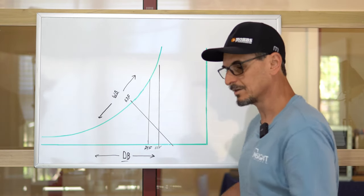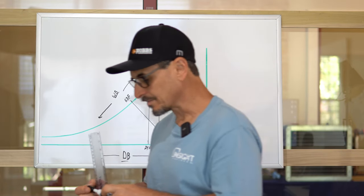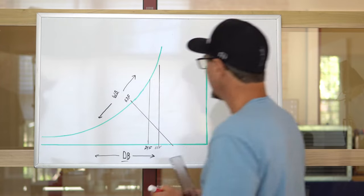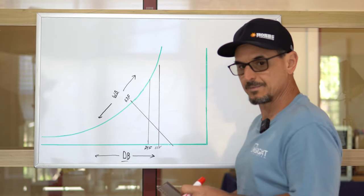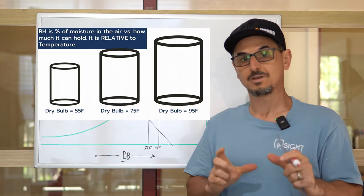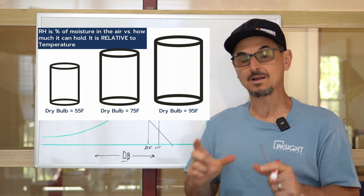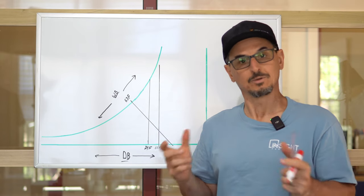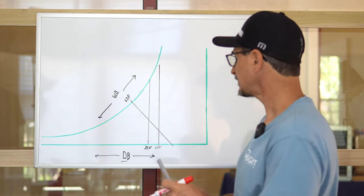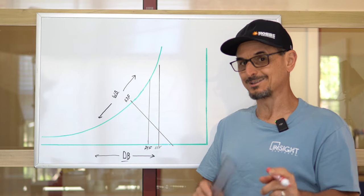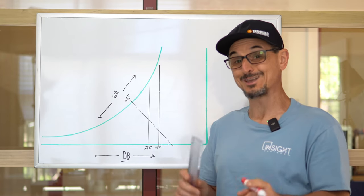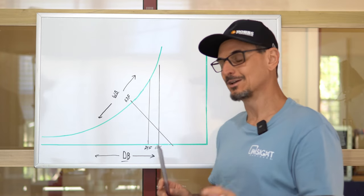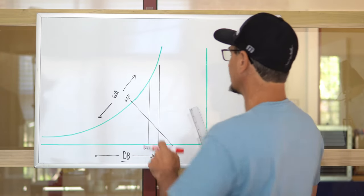Next, let's look at relative humidity — I'll change to the red marker. Relative humidity is the amount of moisture in the air compared to the amount it can hold at a given condition, so it is relative to the temperature. Relative humidity and humidity are two different things. We've done a lot of videos on that on our YouTube channel, HVAC TV — go check that out.